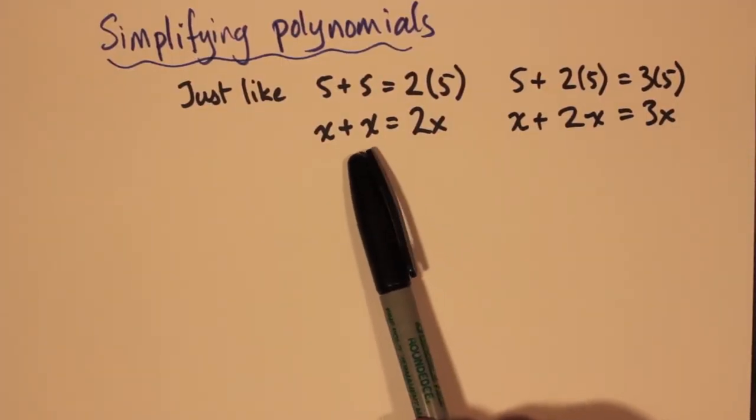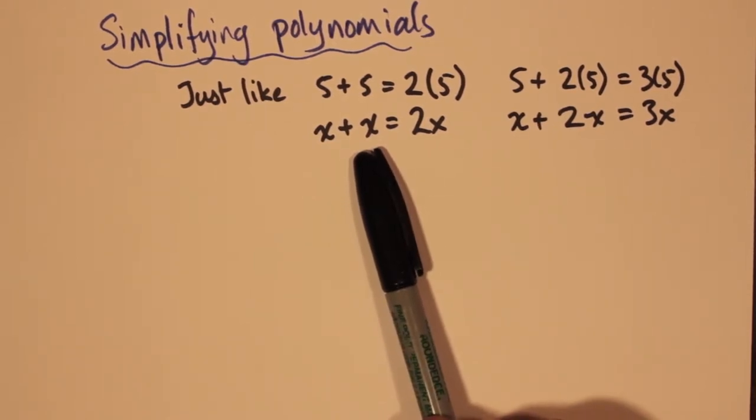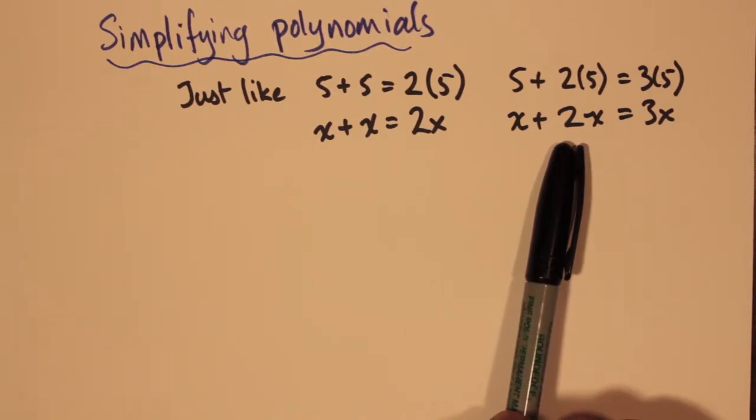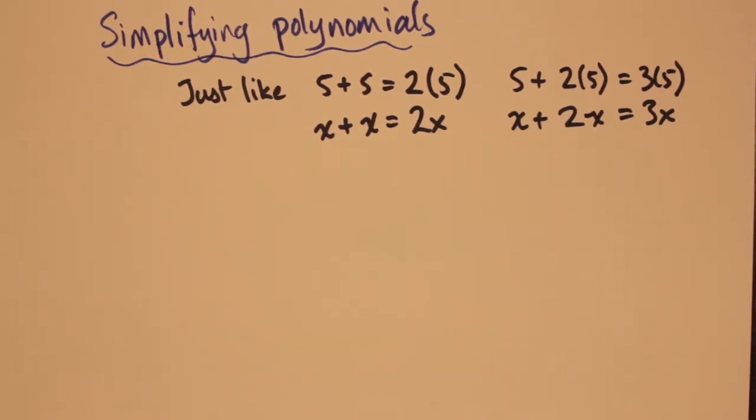We're going to talk about simplifying polynomials. Just like 5 + 5 = 2(5), we can also say x + x = 2x. That's one example of how we can combine terms—x and x are really the same term added to itself, so we can make 2x out of it. Similarly, we can do 5 + 2(5), which is really the same as 3(5) because it's kind of the same as 5 + 5 + 5. So we can say that x + 2x is kind of like saying x + x + x, which is 3x.